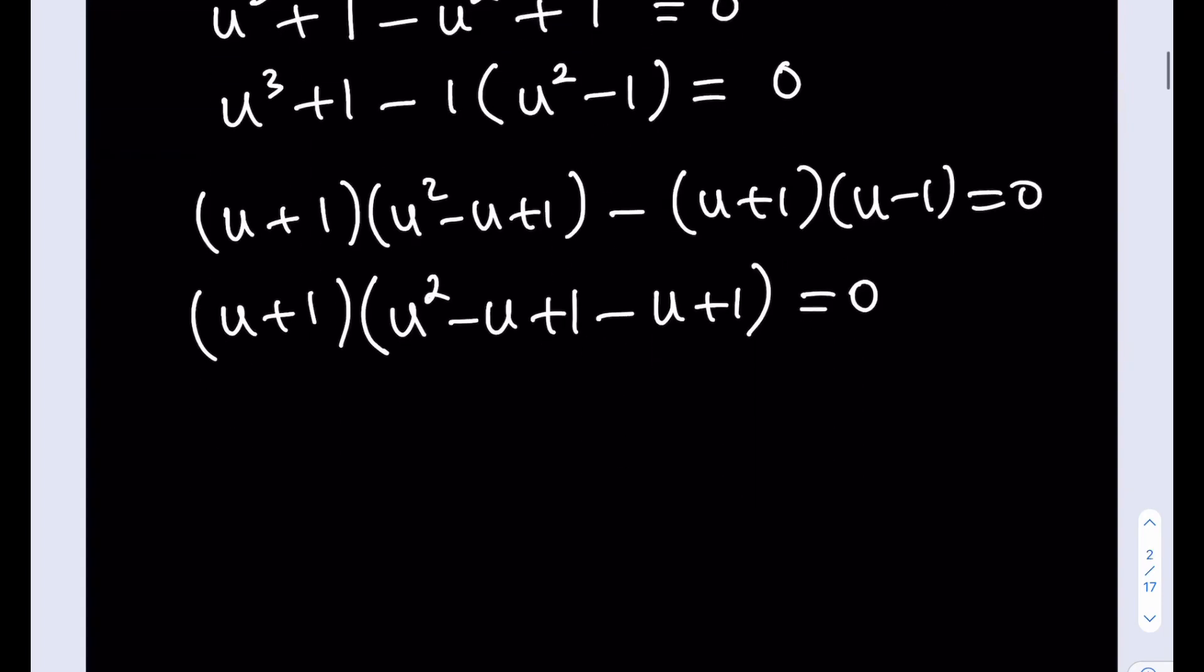But notice that u equals negative 1 is a solution, and the other solution is going to be coming from the quadratic. Let's go ahead and simplify that. u squared minus 2u plus 2. Again, the 2u thing, like happy birthday to you. Now, if it's somebody's birthday, then it'll be your happy birthday song.